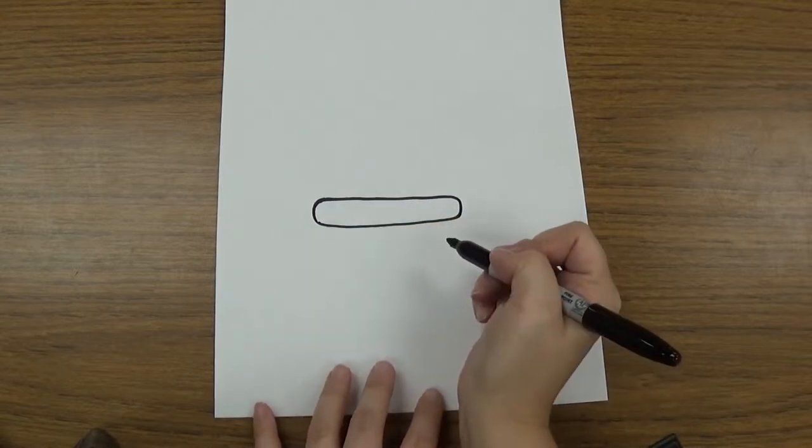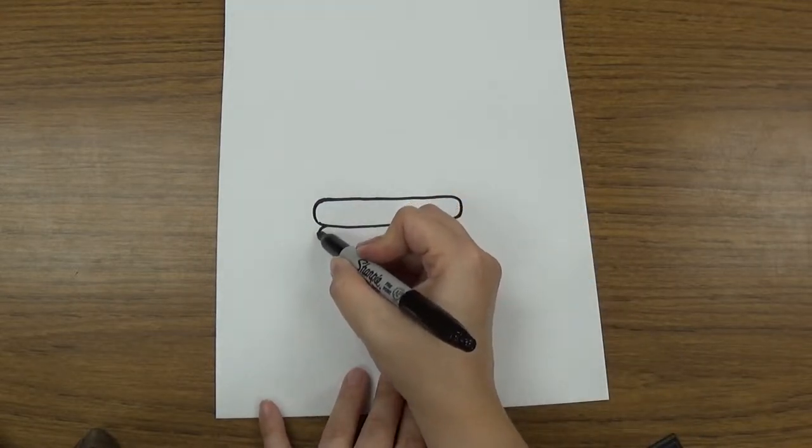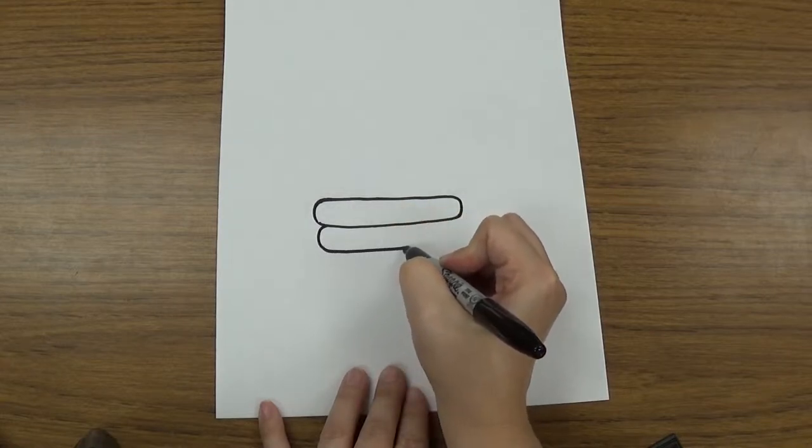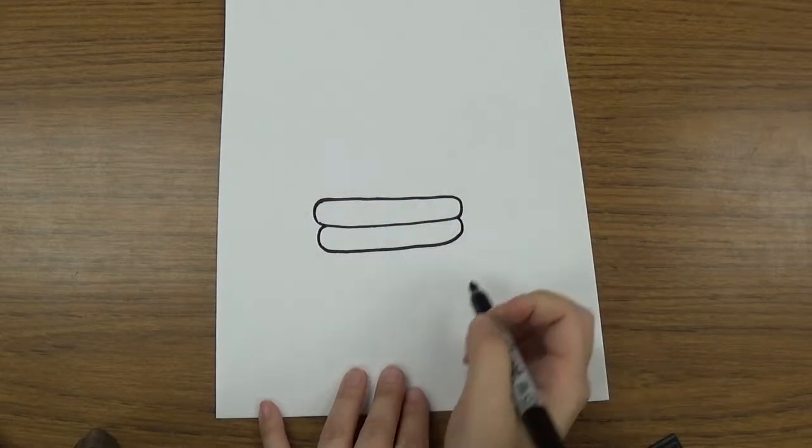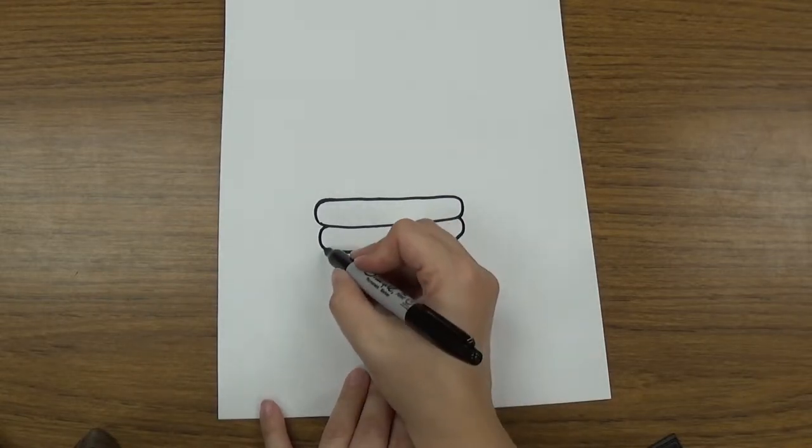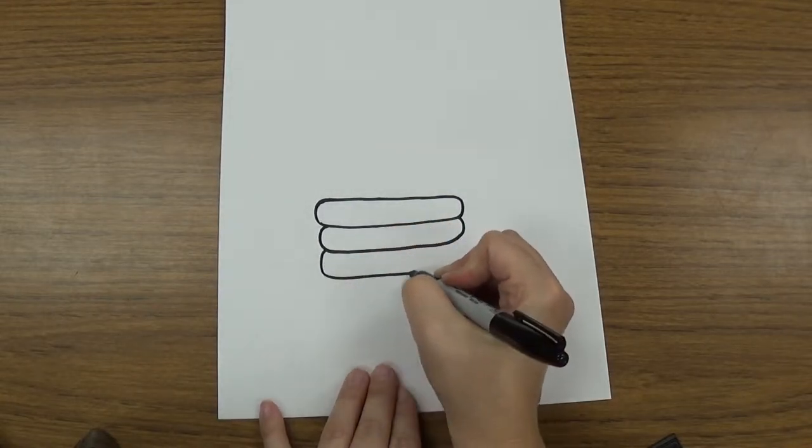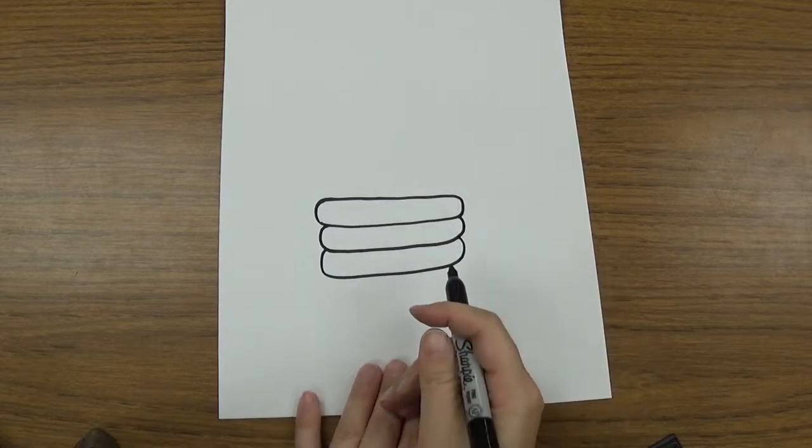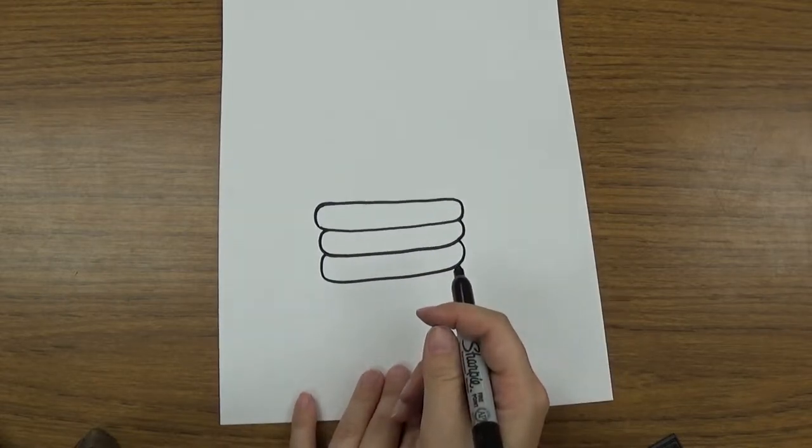And then you're gonna make another one just like it, touching the bottom of it just like this. It comes off the bottom, goes around and touches back up at the top. And you're gonna do one more of those around and back up. So you have three just like that.